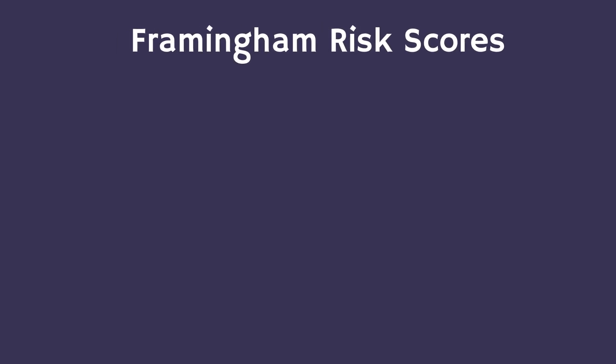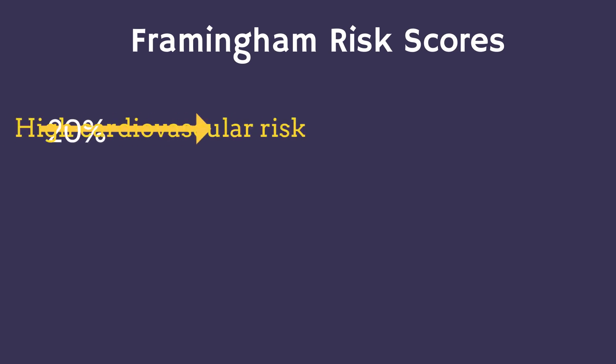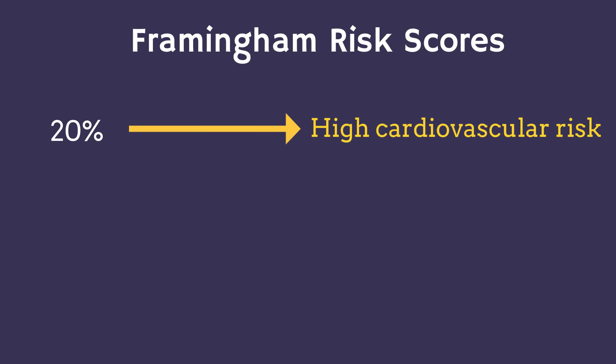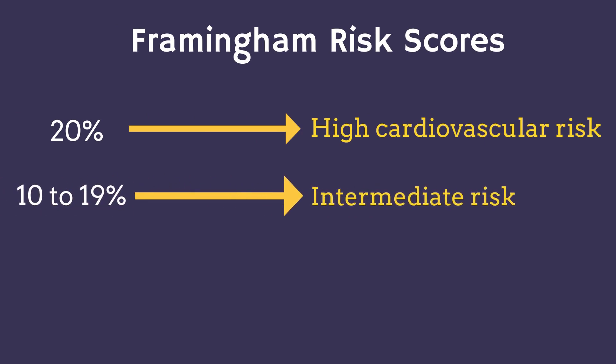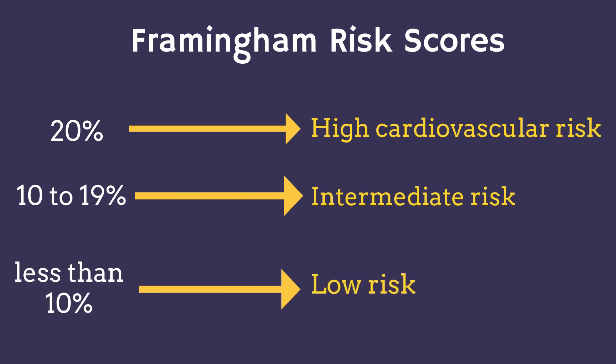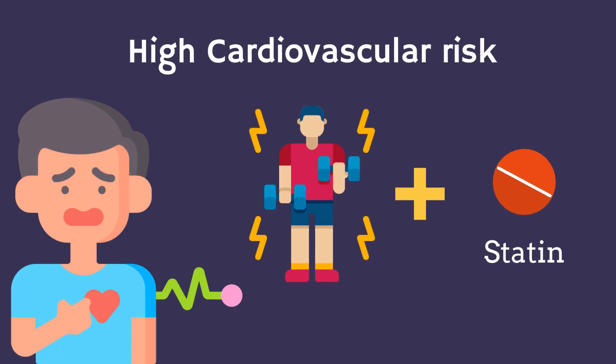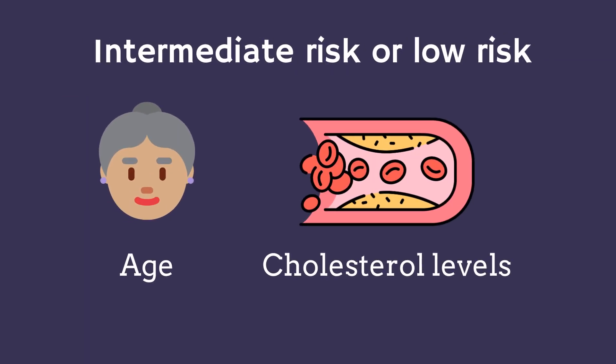Based on the Framingham risk scores, there are different thresholds that indicate whether treatment should be initiated. Individuals with a score of 20% are considered to have a high cardiovascular risk, a score of 10–19% indicates an intermediate risk, and patients with a score less than 10% are at low risk.